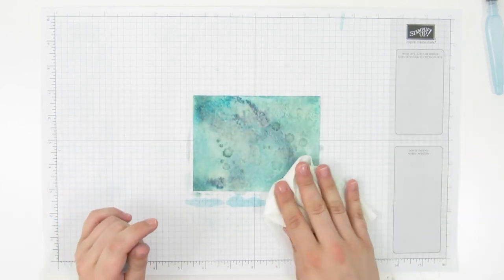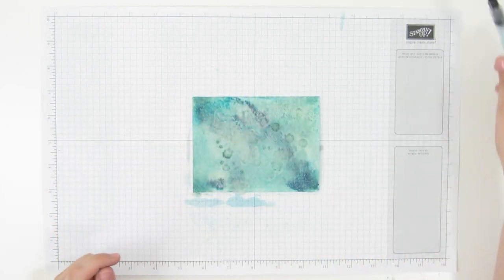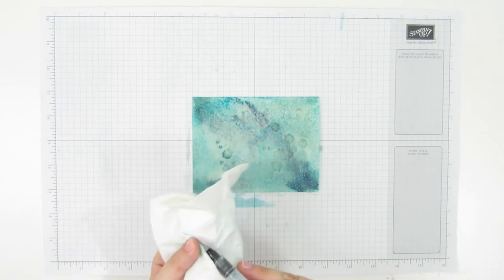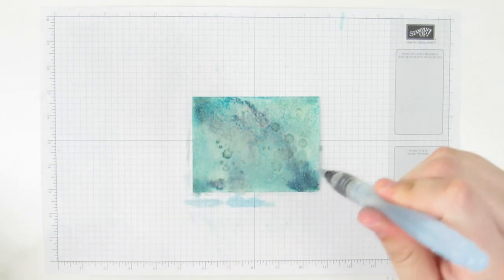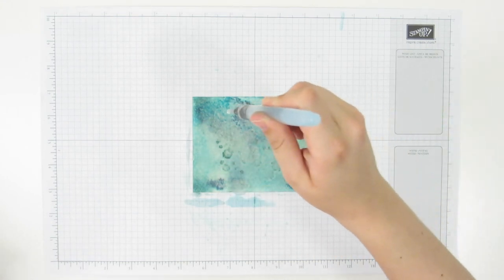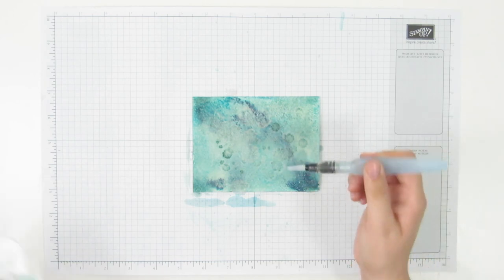Because I want to leave some water spots on here as well. So all I'm going to do is take my nice clean aqua painter and drop some water on there. And now I'm going to leave it to dry and wait until it's completely dry. You'll see that those dry into some nice water spots.